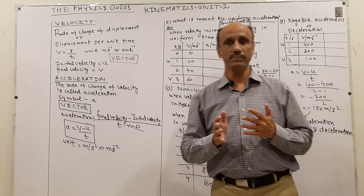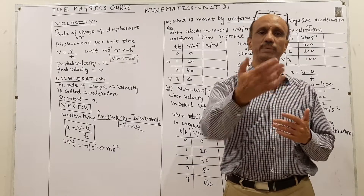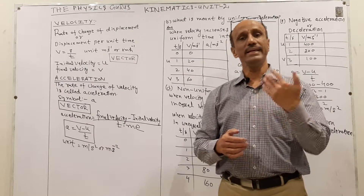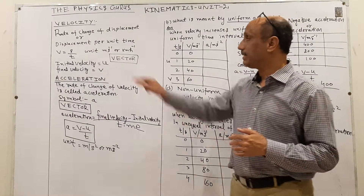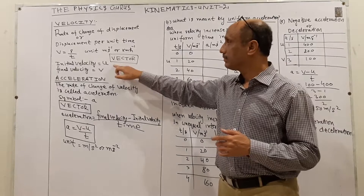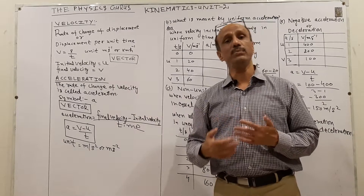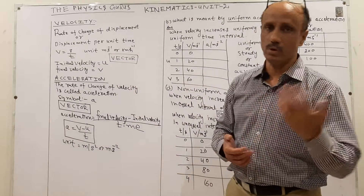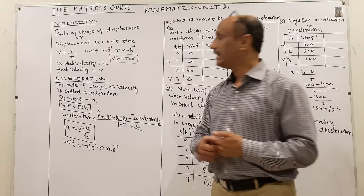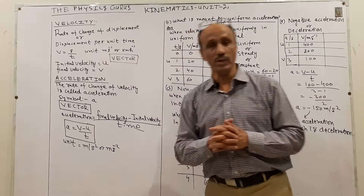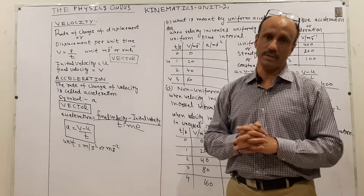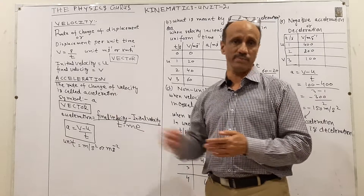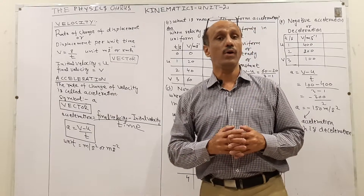When an object starts moving it will gain a particular speed. The initial velocity is represented by the symbol u, and after a particular time, when it gains some other velocity, it is represented by v. You have to remember both symbols u and v because they will be used in the next definition of acceleration.